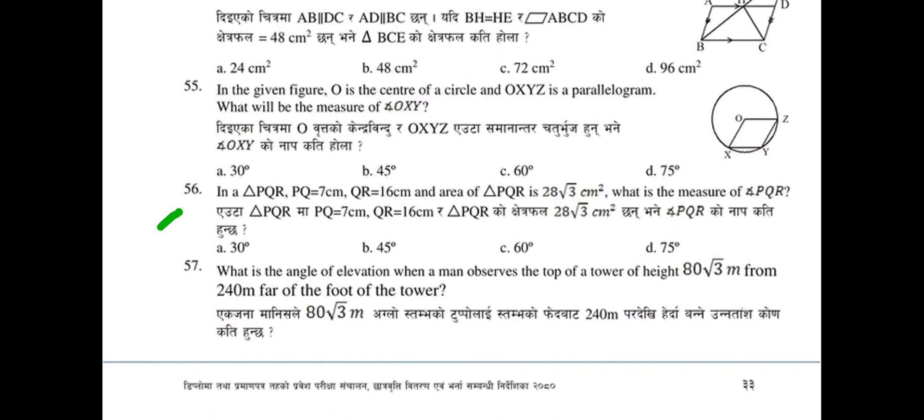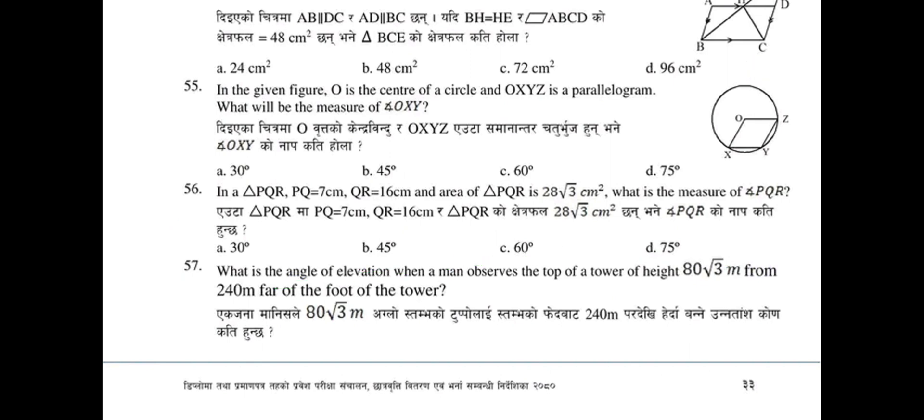What is the measure of angle PQR? Options: 30°, 45°, 60°, or 50°. Question 57: What is the angle of elevation when a man observes the top of a tower of height 80√3 meters from 240 meters away from the foot of the tower?